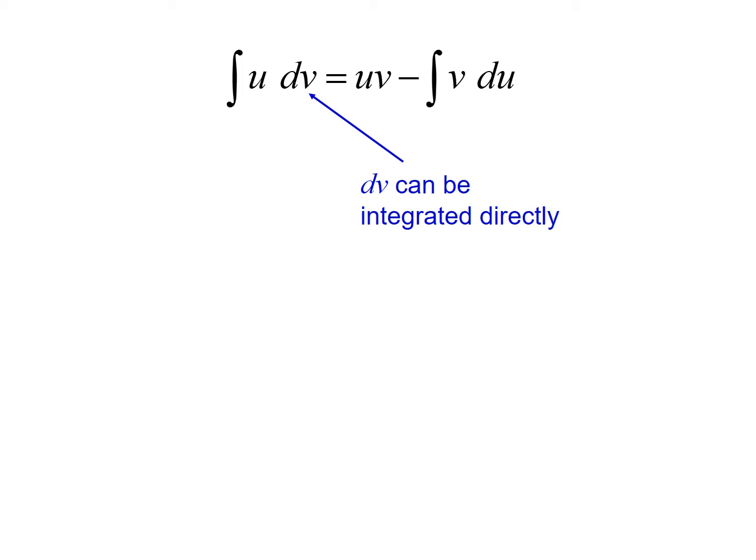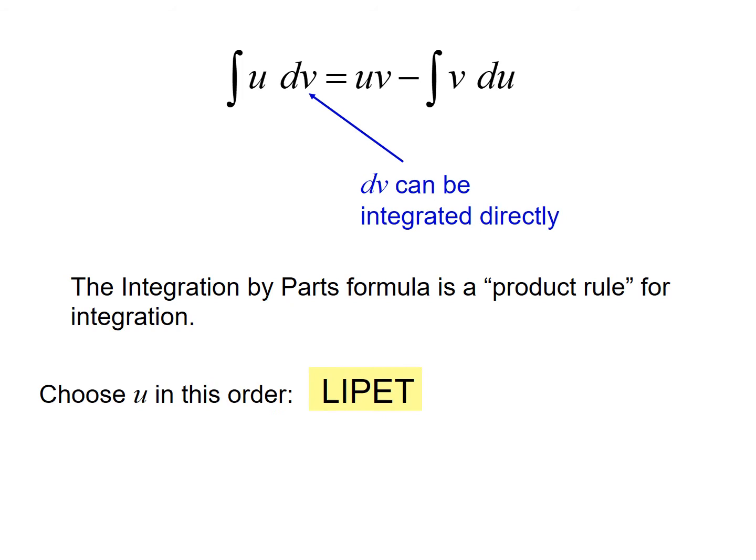We're taking the integral of something that's in the form of u dv, which means it's a product of two functions. We'll call one of those functions u and the other one dv. dv is typically going to be some function that can be integrated directly, one of the just reversals of one of our derivative rules that we already know.